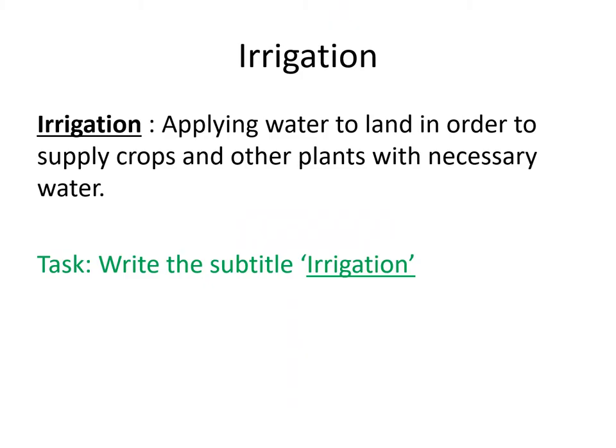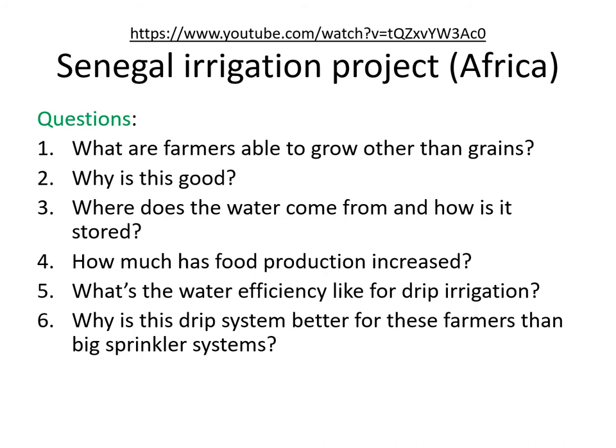Please write the subtitle 'irrigation' in your book and copy down the definition. Once you've done that, pause the clip and then move on. Now let's look at a real life example — we're going to focus on Senegal, which is a country in Africa. They have set up an irrigation project in order to water the land and grow more food. As you know, many African countries have a food deficit, so it's essential that they can boost production for the future. Pause this slide, go to the YouTube clip using the link shown, watch the clip and answer the six questions.